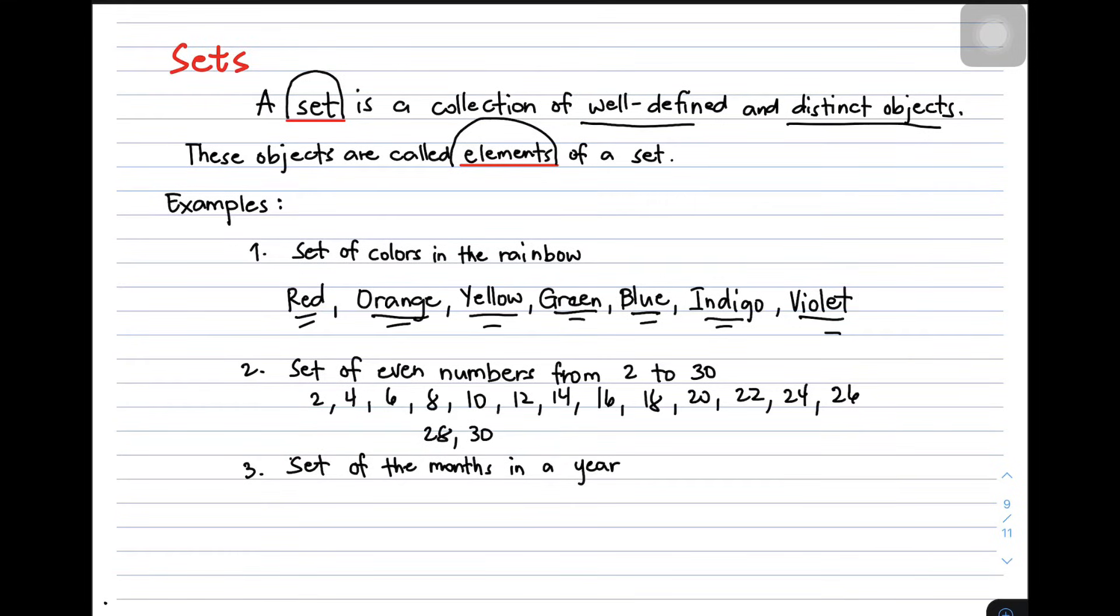Again, the second example is well-defined and the objects are distinct. Next, let's move on to item number 3. Set of the months in a year. So we think, is this well-defined and can we enumerate the objects? Yes. Definitely, example number 3 is an example of set.